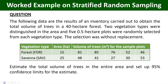The area has two vegetation types: forest and savannah. The area occupied by forest is 15 hectares and savannah 25 hectares. We have established five plots from each vegetation type using uniform allocation. The volume estimates from the five plots are provided in cubic meters. We are to estimate the total volume of trees in the entire 40-hectare forest area and set up 95% confidence limits for the estimate.